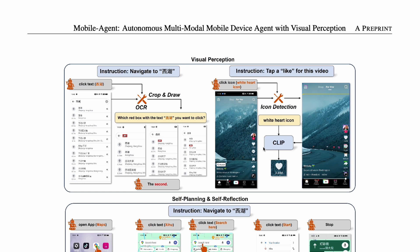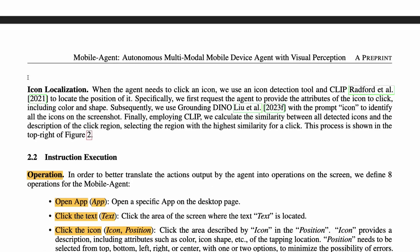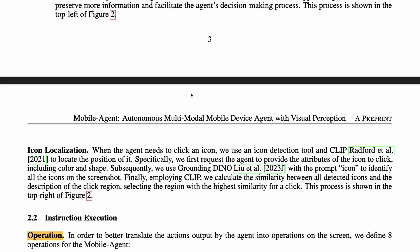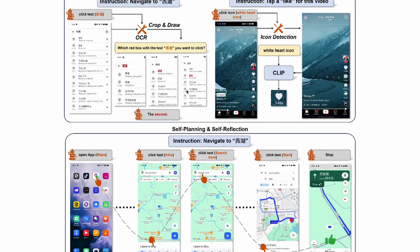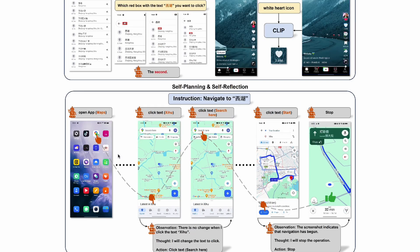For example, on a screen, if the instruction is to tap a like, the system must understand that 'like' means a white color heart in that particular scene, and then locate where that white color heart is. They use CLIP for that. For identifying text, they use OCR, and for identifying icons, they use Grounding DINO. So you have text localization and icon localization to pinpoint where a particular element is on a given screen, which enables GPT-4 Vision to be agentic.